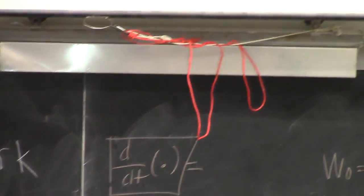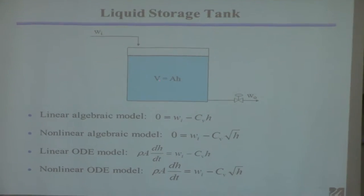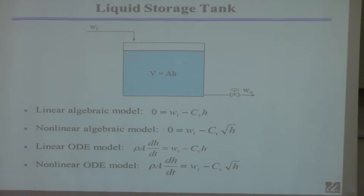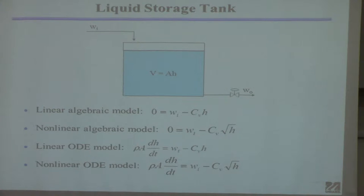I'm going to take the derivative of the mass of fluid in the tank. The mass is rho times volume, which is rho times area times H. Take the derivative with respect to time — that gives you how mass changes with time. The units are mass per time, matching the mass flow rates. This equation is linear in H because H is multiplied by a constant and its derivative is also multiplied by a constant. That makes it a linear differential equation.